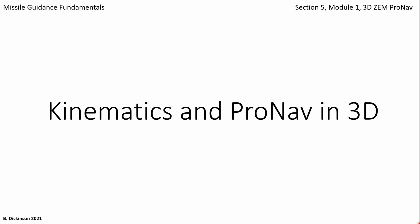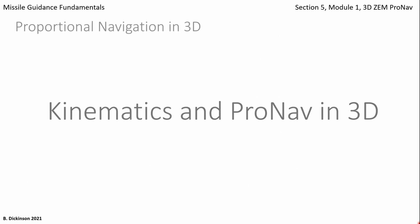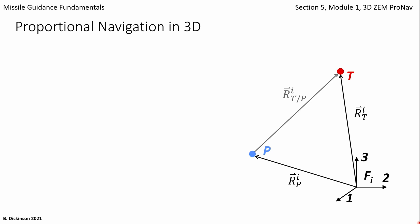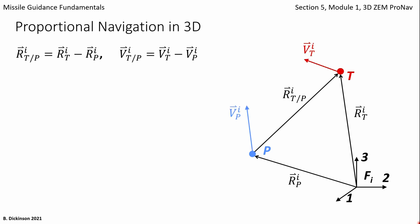With the preliminaries over, let's get on to the meat of this subject — PRONAV in 3D. For this, we're going to use the zero effort miss form of PRONAV. We start with an inertial frame of reference with an inertial coordinate system assigned. We have a pursuer, pursuer position vector, target, target position vector, and relative position vector. To determine that, it's simply the difference between the target position and pursuer position. And the relative velocity is simply vt minus vp.